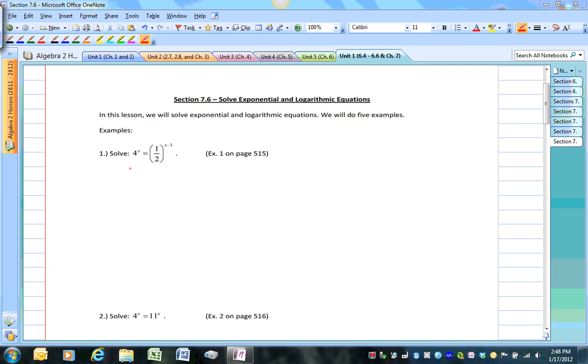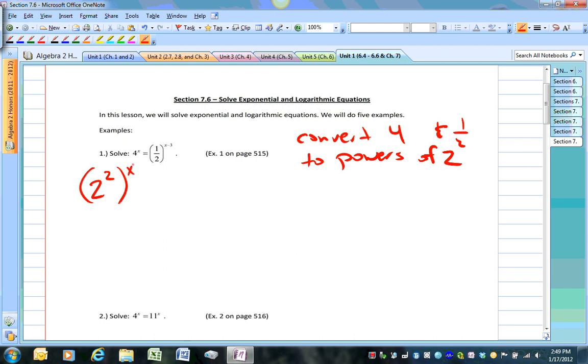Here we have the equation 4 to the x equals 1 half to the x minus 3. One thing you could do is convert 4 and 1 half to powers of 2. For example, I know 4 is 2 squared, so 4 to the x can be rewritten as 2 to the 2x. And 1 half can be rewritten as 2 to negative 1. Using your properties of exponents, you can multiply 2 and x, multiply negative 1 to x minus 3.